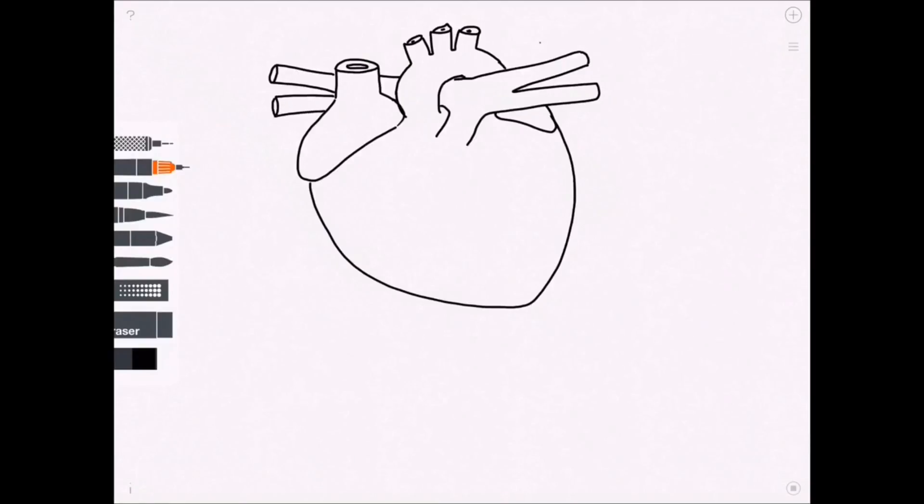Right, so the big curvy upside down C coming out of the left ventricle, oops, shaded the wrong bit, this is the aorta and this is the biggest artery around the heart.